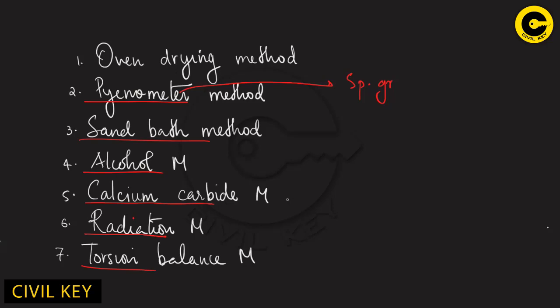The acetylene gas method is related to the calcium carbide method. Calcium carbide method produces acetylene gas — it is a basic method used in certain cases. The oven drying method is the basic equation method used as the standard approach.